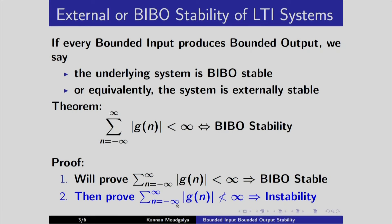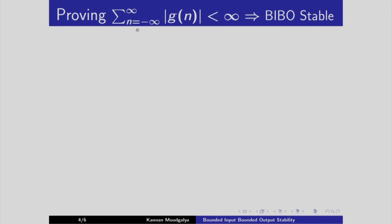Then we will assume the system to be having impulse response that is not bounded. Then we will show that it is possible to produce a bounded input which will produce an unbounded output. In other words, instability. First, we will show this direction.